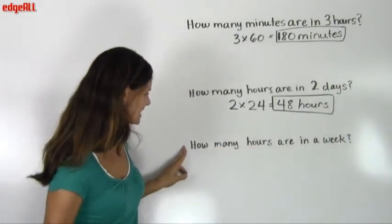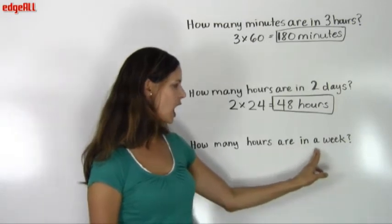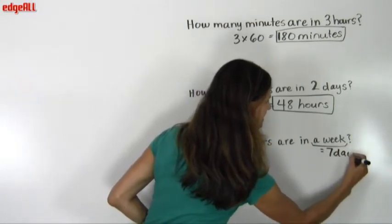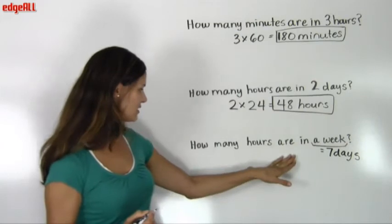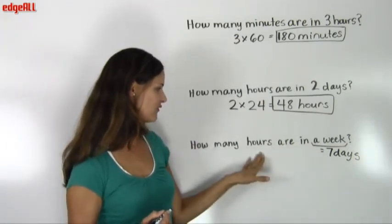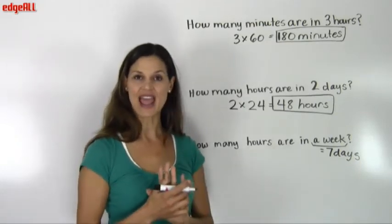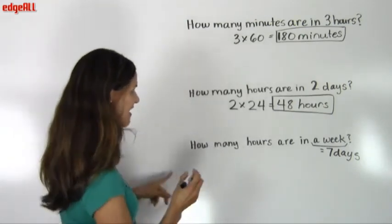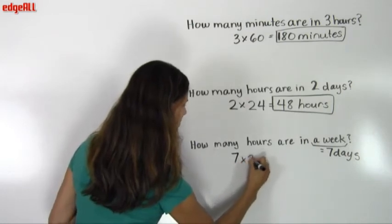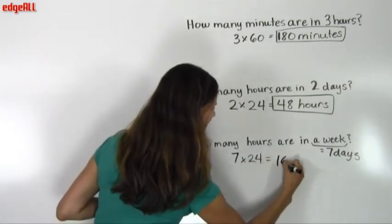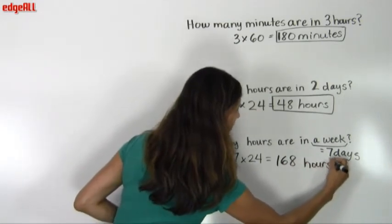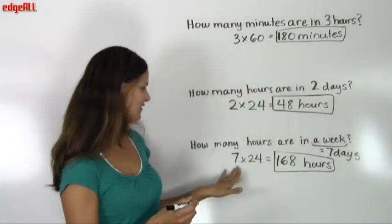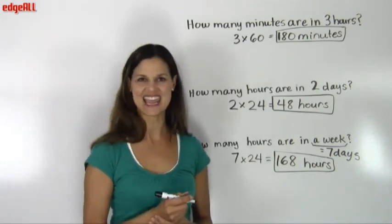Our third question asks: how many hours are in a week? We know that one week equals seven days, and in one day we have twenty-four hours. So to find out how many hours are in seven days, we multiply twenty-four times seven. Seven times twenty-four equals one hundred sixty-eight hours in one week.